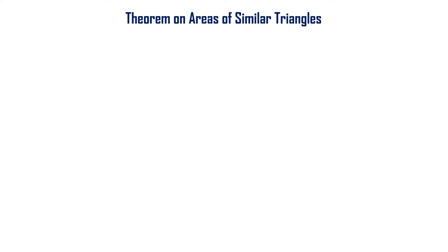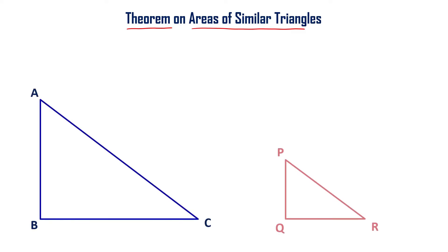Let us now learn about a theorem on areas of similar triangles. For that, let's consider two right angle triangles: triangle ABC and triangle PQR. These are two right angle triangles where angle B equals angle Q equals 90 degrees.